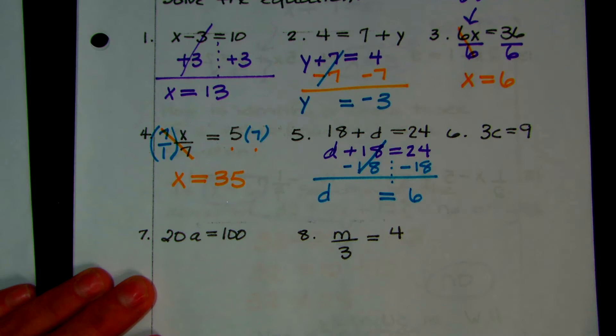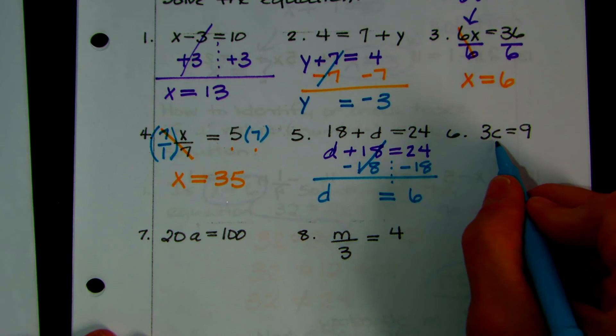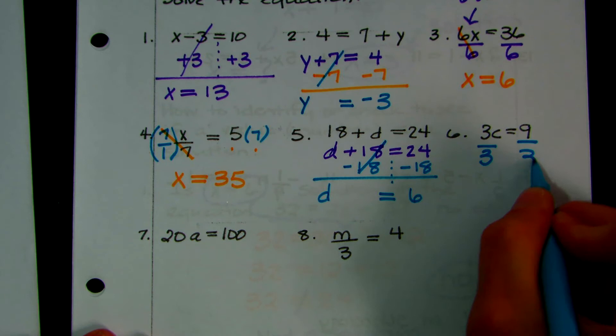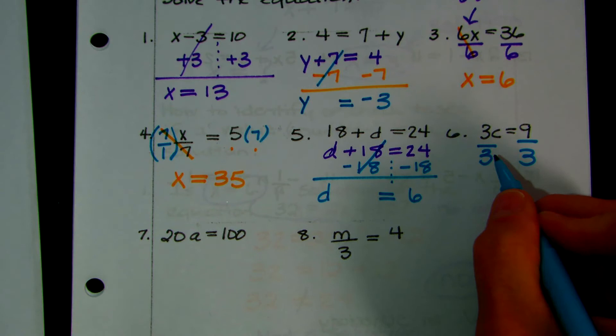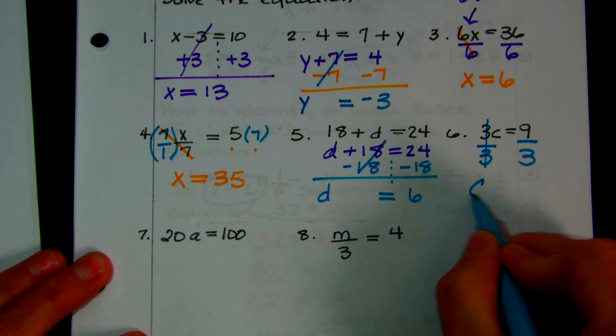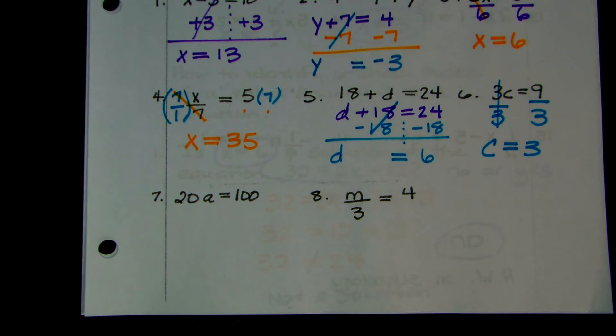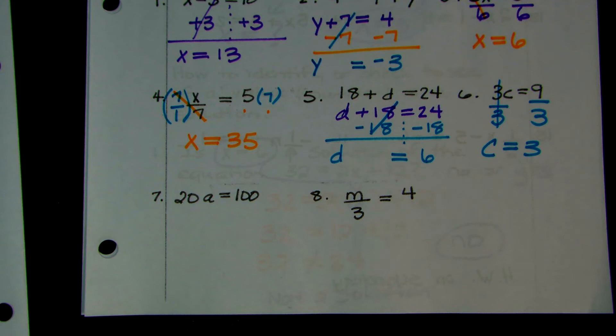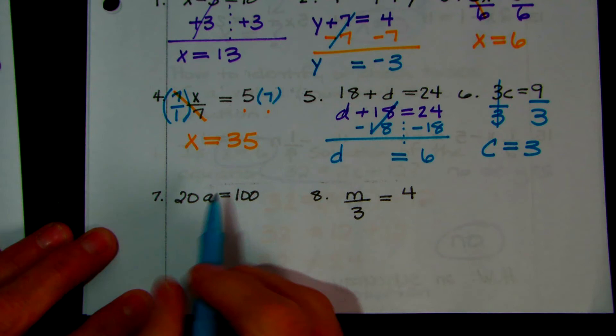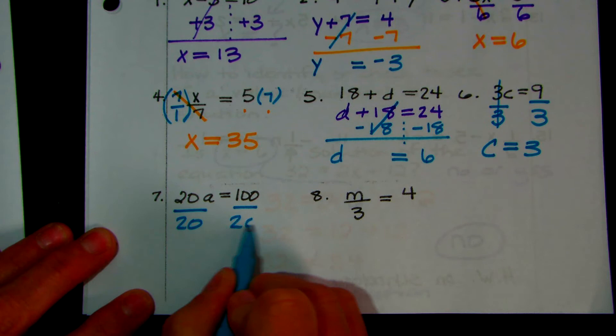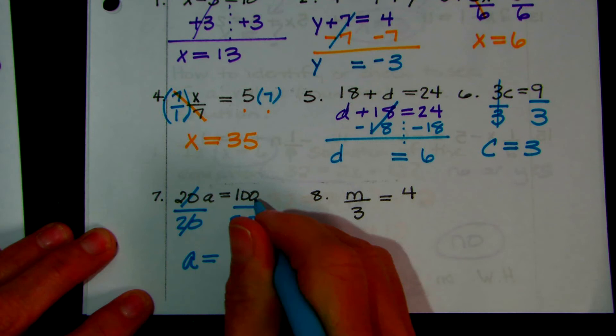Number 6: 3 times C equals 9. The opposite of times is to divide. We're going to divide by the number next to the variable — not by 9 — because we want the variable alone, we want to know what C is. So the 3's cancel, you have 1C, and 9 divided by 3 is 3. Number 7: 20 times A equals 100. Divide both sides by 20 — 20 divided by 20 cancels to give 1A, and 100 divided by 20 is 5.